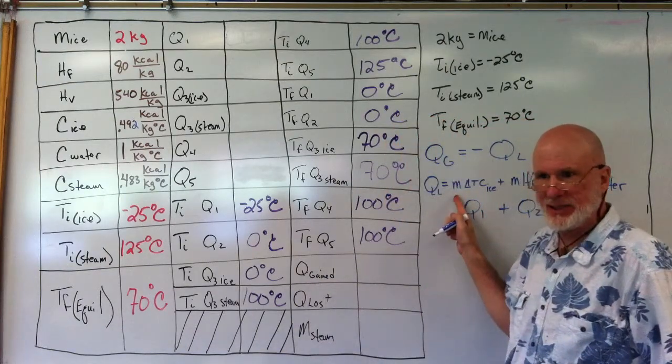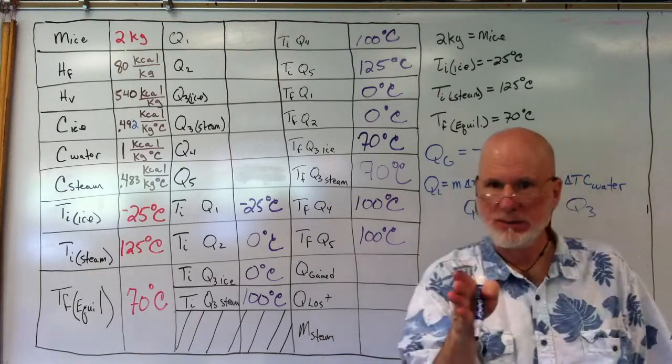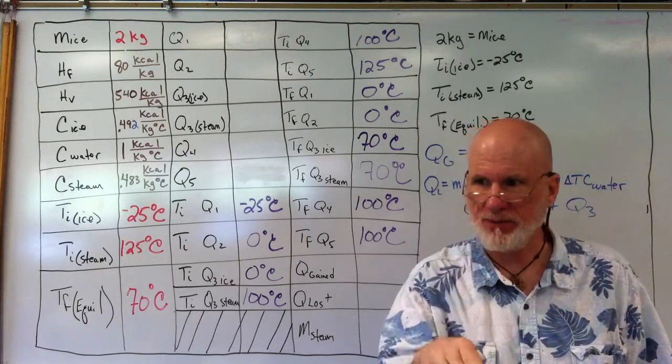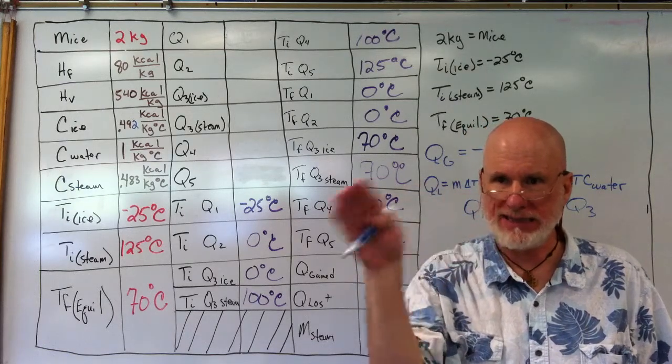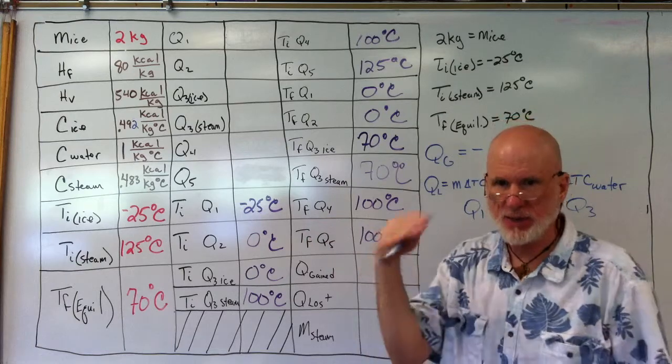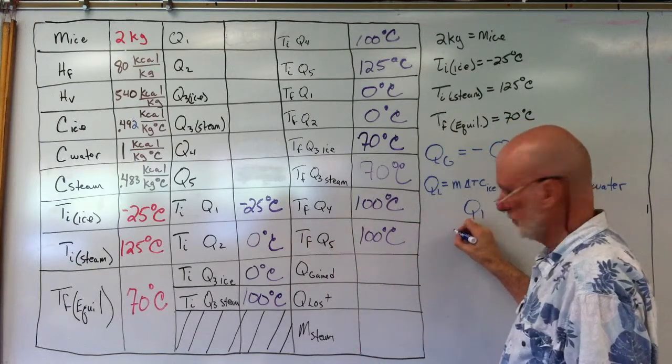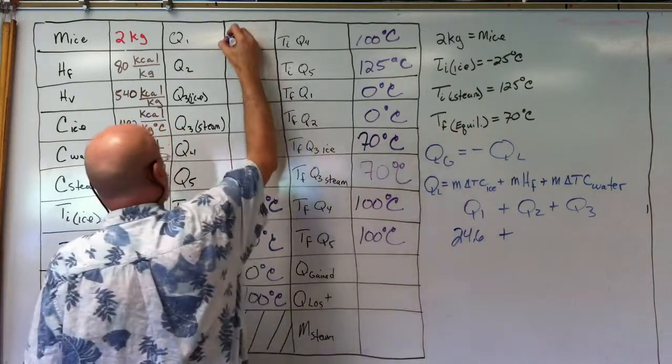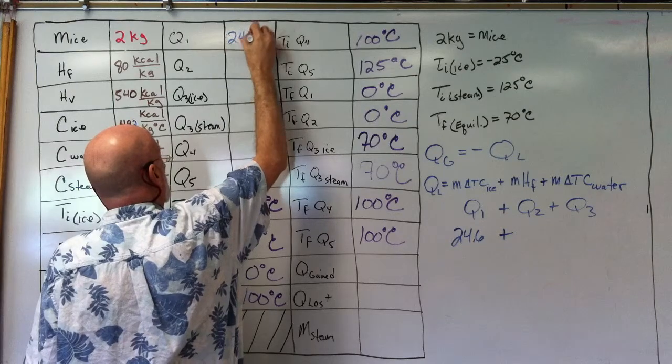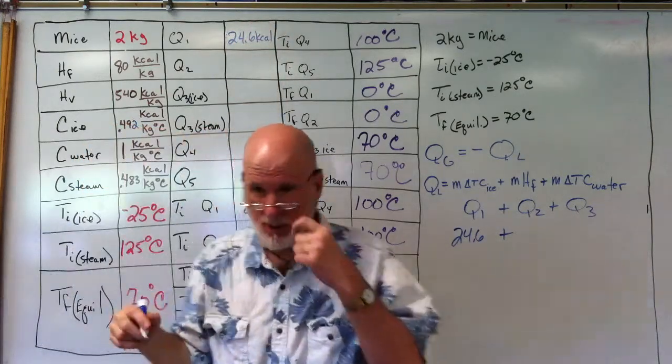The mass is two. The change in temperature is 25, right? Negative 25 to zero. Final zero minus negative 25 is positive 25. So it's going to be a positive... wait, 24.6. So that's Q1. Positive, now we know it's positive because...